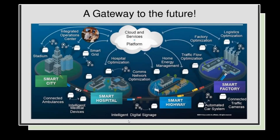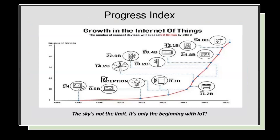This is the diagram of the intelligent digital systems, showing the progress index of the Internet of Things. We can see the graph gradually increasing and then rapidly increasing from 2013 to 2020. Here, the sky is not the limit — it is only the beginning with IoT. In 1992 the usage of devices was near zero, and from 1992 to 2020 the difference is about 50 billion devices, showing how rapidly technology is increasing.